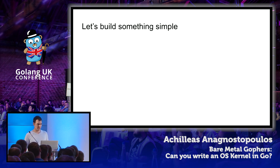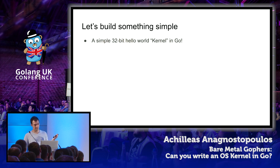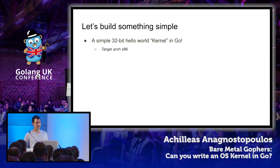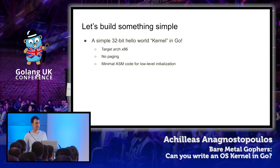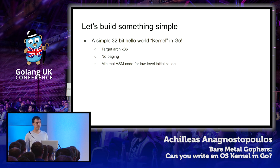As talk time is limited, we'll simplify our approach. The last part of this talk will be a live coding session where we build a simple 32-bit Hello World program running at ring zero that outputs something to the screen. Our target architecture will be x86, which makes things simpler. We won't use any paging, so our code will directly address physical memory. We need minimal assembly code for low-level initialization. Since the Plan 9 assembler is a bit limited for this purpose, we'll use an external tool — the NASM net-wide assembler, as I'm more comfortable with Intel syntax. The assembly code will be posted on GitHub together with the rest of the code.